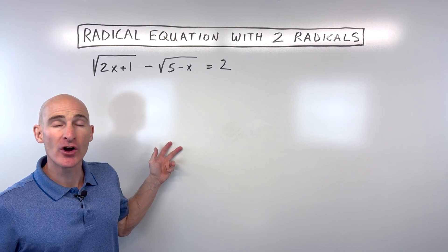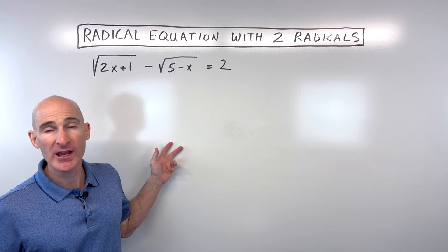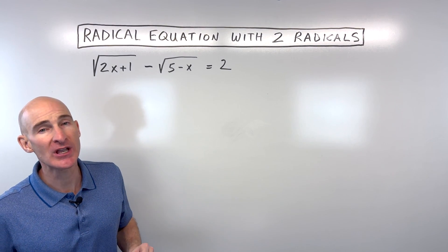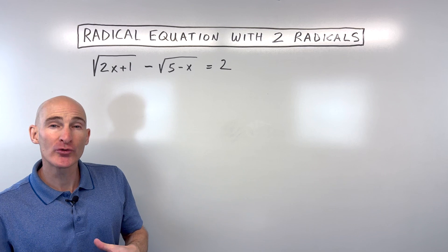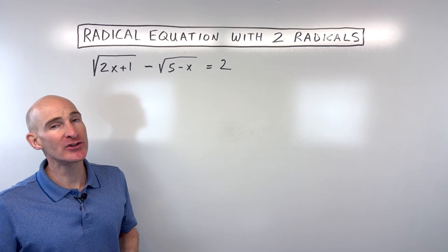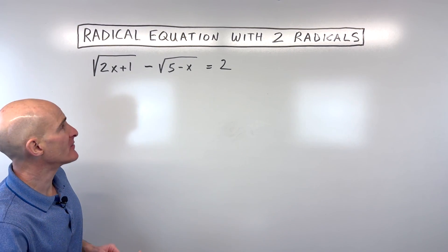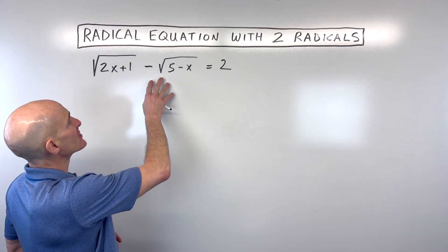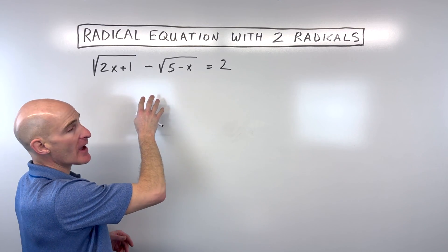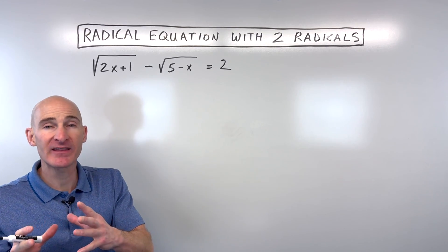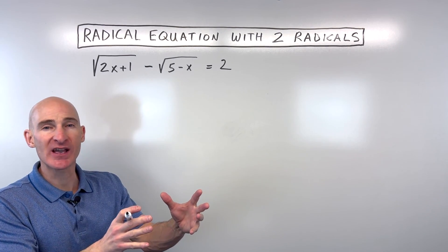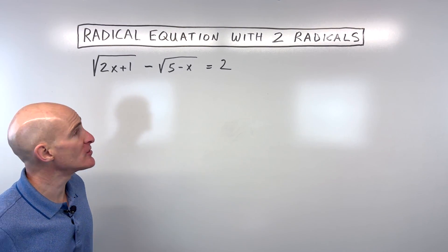In this video, you're going to learn how to solve radical equations involving two radicals, and we're going to go through it step by step. The first thing you want to do when you have two radicals like this is isolate one of the radicals on one side of the equal sign, with everything else on the other side. So let's do that first.